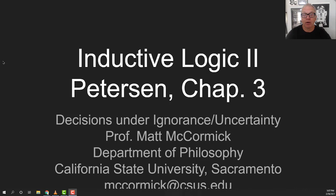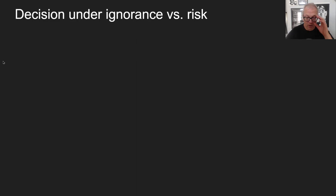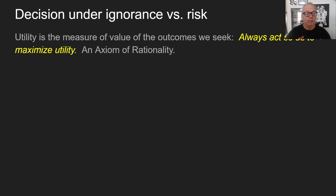Today we're going to talk about primarily making decisions under ignorance — that's a technical term, it stands for something special — and we have to contrast that with decisions under risk. One of the basic principles we're going to adopt, lifted from utilitarianism, is that utility is the term we use to measure the value of the things we're after, the things we desire, the things we have goals for. We're always going to act so as to maximize utility. That's just an axiom of rationality.